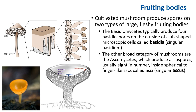Most cultivated fungi produce spores on two types of large fleshy fruiting bodies. The basidiomycetes typically produce four basidiospores on the outside of a club-like microscopic cell called a basidium. These are found on the edge and face of gills of a typical mushroom, but they also occur on the outer surface of icicle-like projections on lion's mane mushroom and on the convoluted surface of jelly mushroom. In boletes like porcini, which we can't cultivate, the basidia line the inner surface of pores on the underside of the cap.